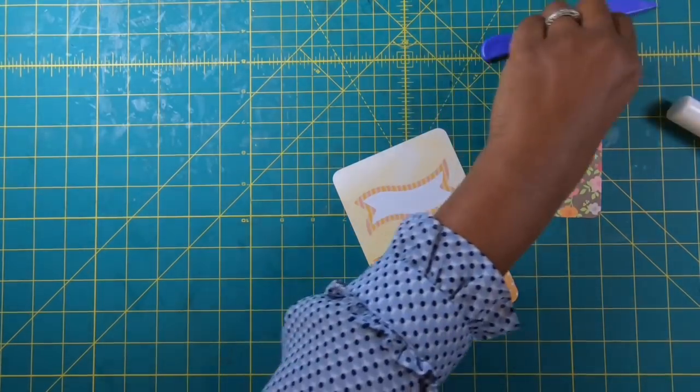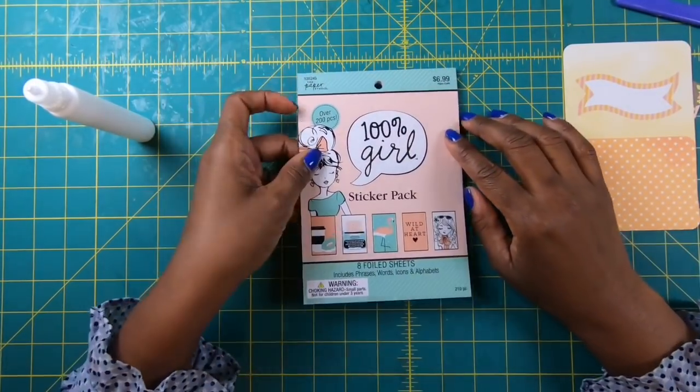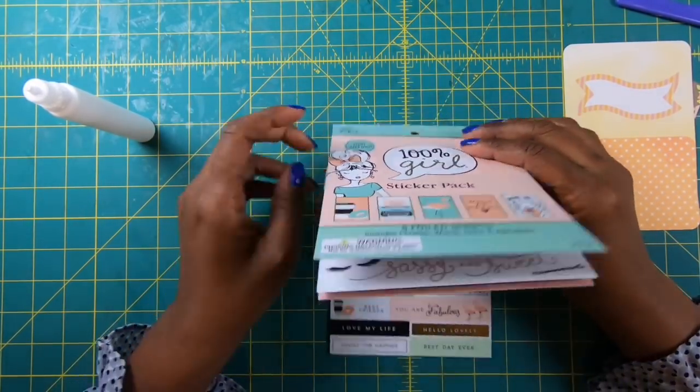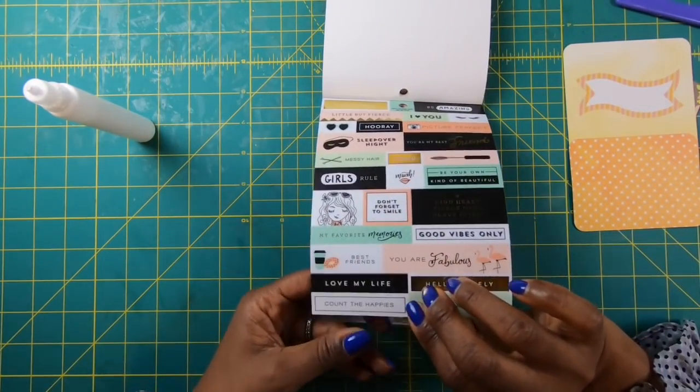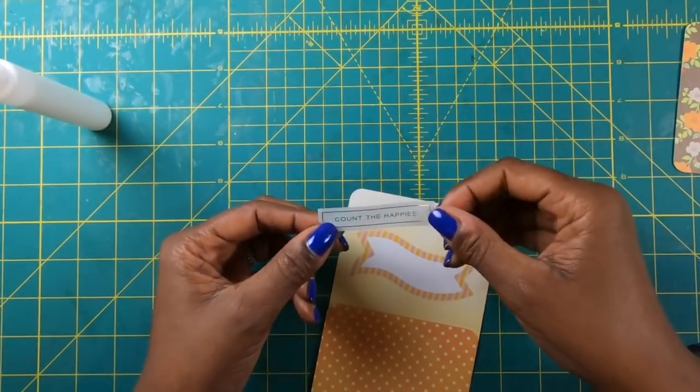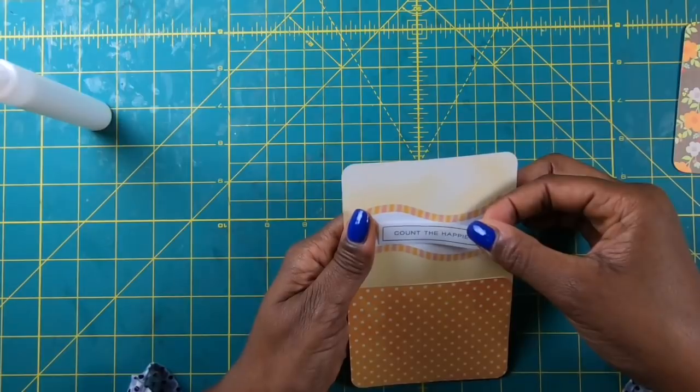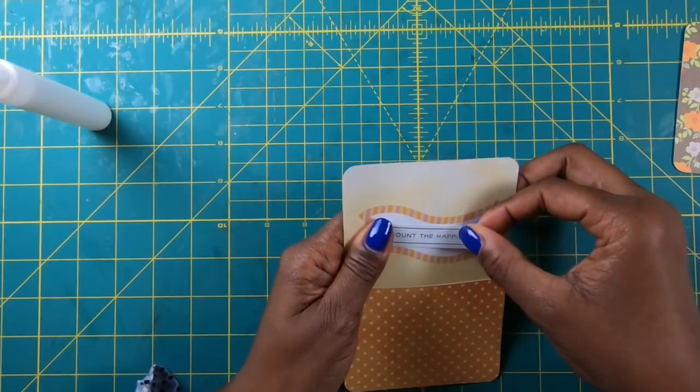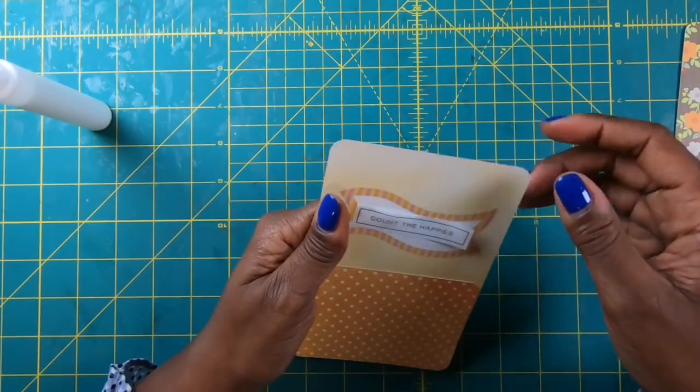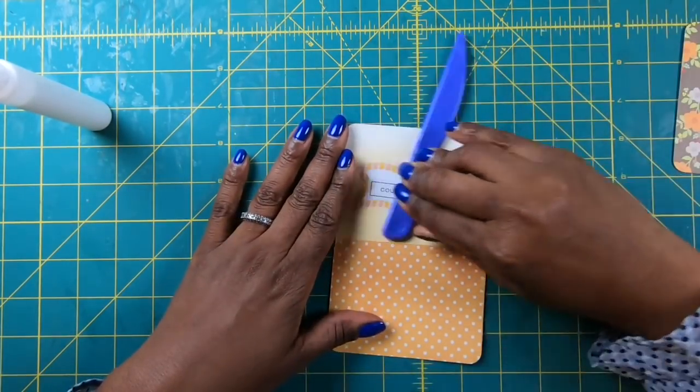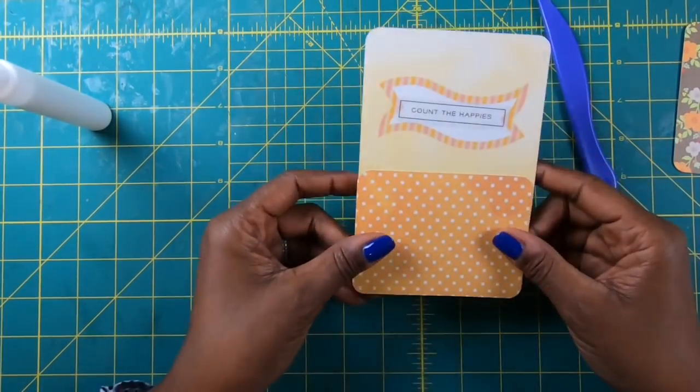There, we've got a cute little pocket. I'm gonna give that a moment to dry. While that's drying, I'm gonna go ahead and take one of my stickers from this 100% Girl sticker pack that I got from Hobby Lobby a while back, and I am going to choose the one that says count the happys. I'm going to take my sticker and just place it on here, let me see if I can get this on here nice and straight. I think that looks pretty good. I'm going to take my bone folder and just smooth that down, and it says count the happy.